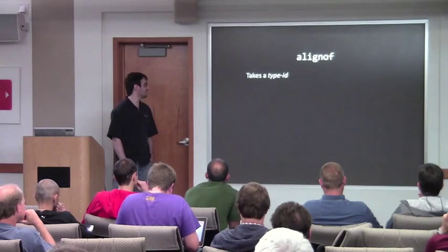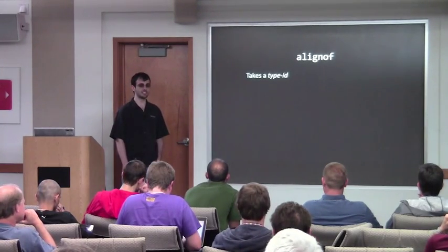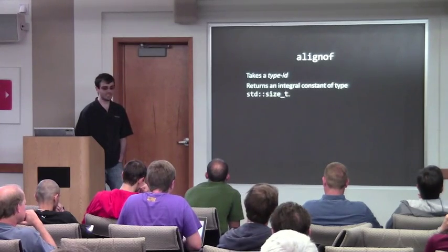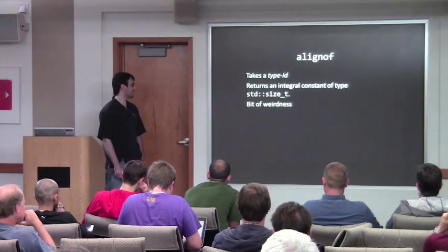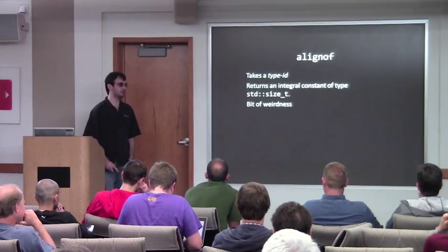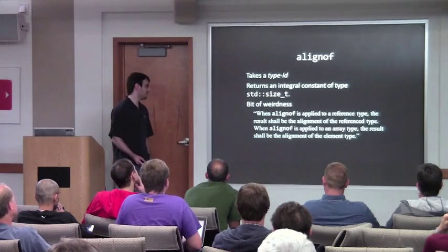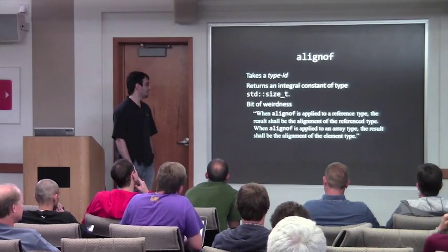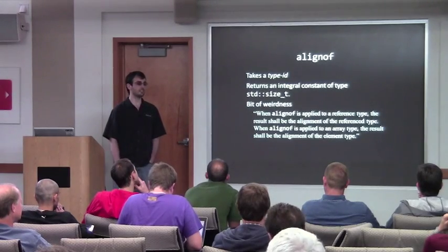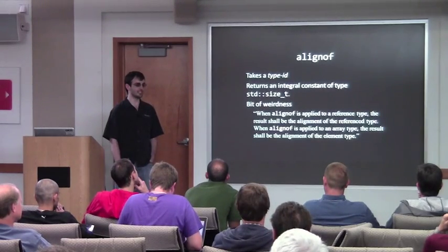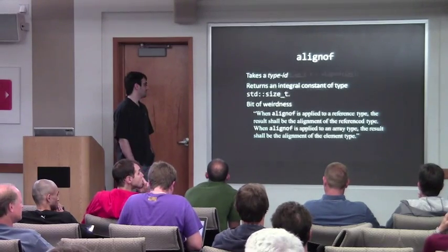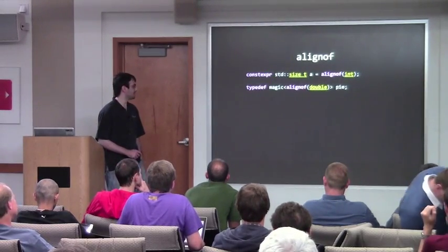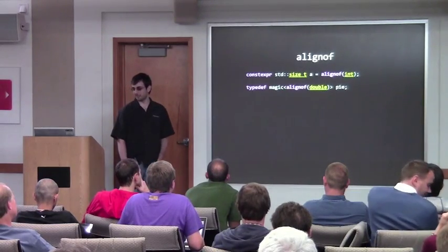So first, `operator alignof`. This takes a type-id, which is basically just a name for all the different ways you can spell out a type. It returns an integral constant expression of `size_t`. There's a bit of weirdness: it's kind of similar to `sizeof`, where when applied to a reference type, the result is the alignment of the actual referenced type. And when applied to an array type, it is the alignment of the element type, which is almost always the same as that of the array, but sometimes can be different. `alignof` is pretty simple — you can assign it to a constant, pass it to a template.